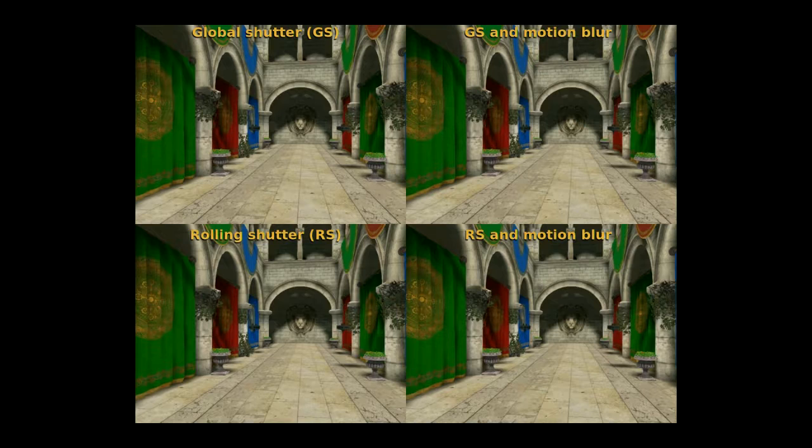In each experiment the top left image shows the ideal global shutter image, the top right image the global shutter with motion blur, the bottom left the rolling shutter alone, and bottom right the rolling shutter and motion blur.